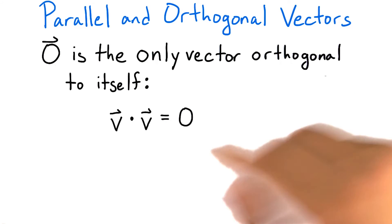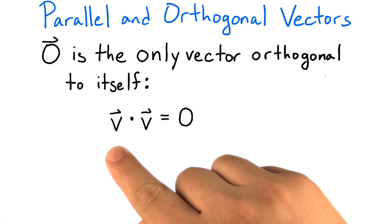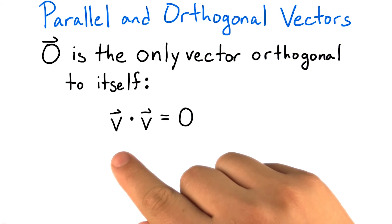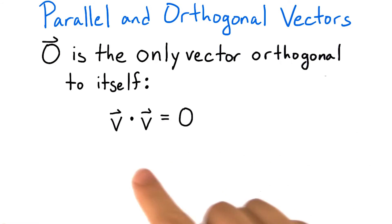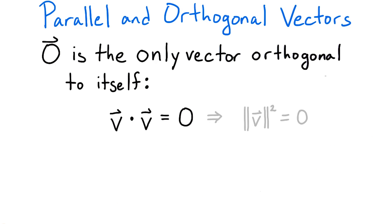To see why, suppose that v is a vector, some vector, maybe not zero, but it has the property that it's orthogonal to itself. That means that v dot v equals zero. But recall that v dot v equals the magnitude of v squared. So that means the magnitude of v squared equals zero. In turn, that means that the magnitude of v equals zero. Since the zero vector is the only vector with zero magnitude, that means the zero vector is the only vector that v could possibly be. So if some vector is orthogonal to itself, it must be the zero vector.